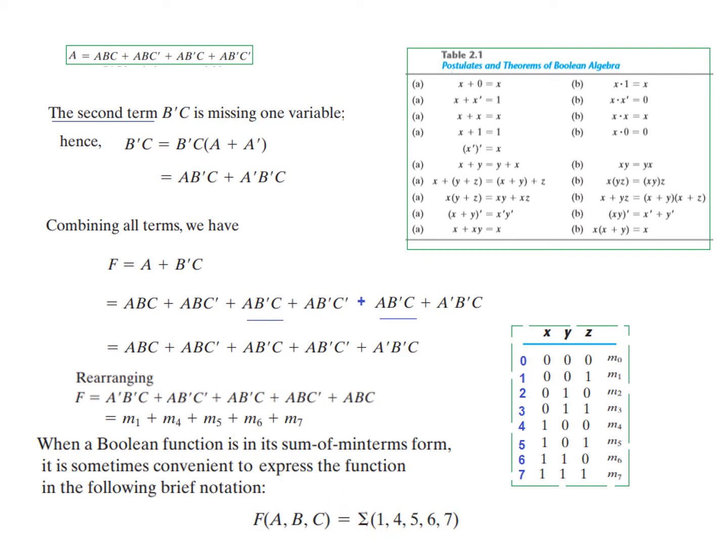So actually we are not writing m. We are just writing this value 1, and then this value 4, then 5, and 6, 7. And this term summation actually is showing that these are ORed. The summation stands for ORing the term. So this is actually a representation of this.